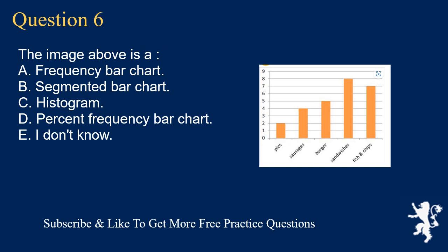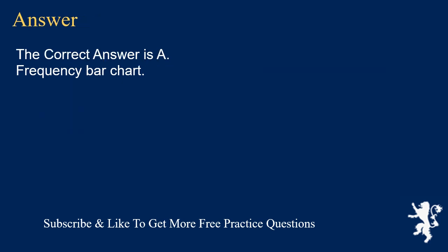Question 6: The image above is A. a frequency bar chart, B. segmented bar chart, C. histogram, D. percent frequency bar chart, E. I don't know. The correct answer is A, frequency bar chart.